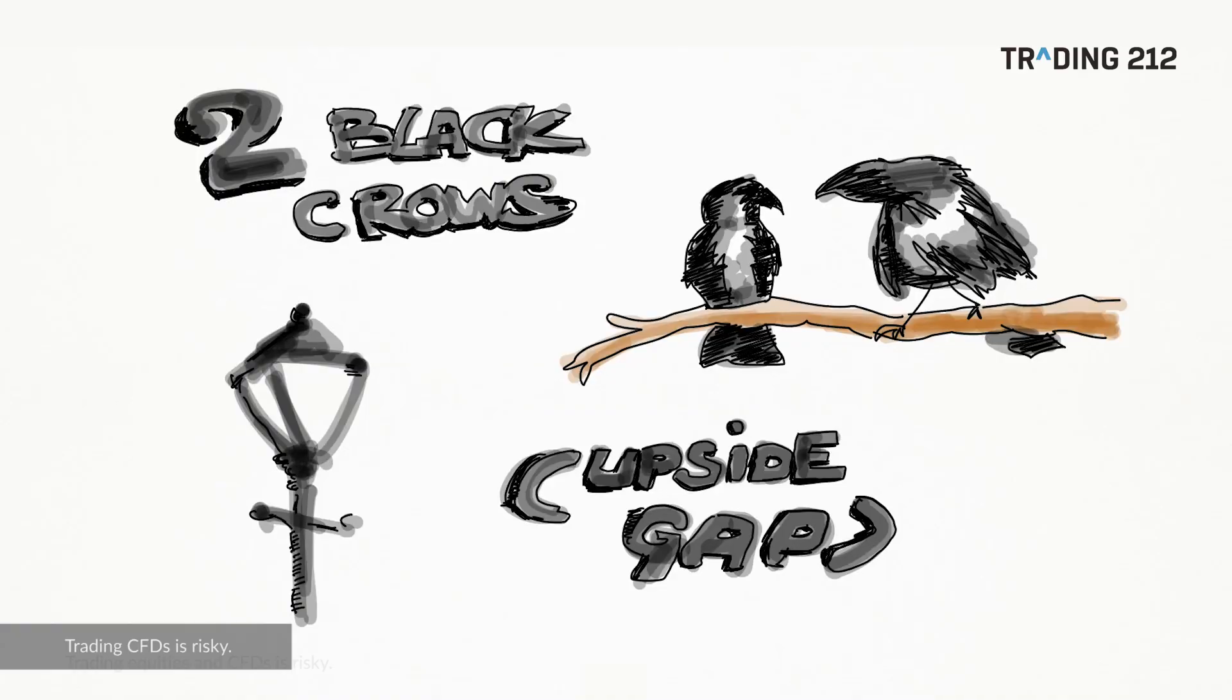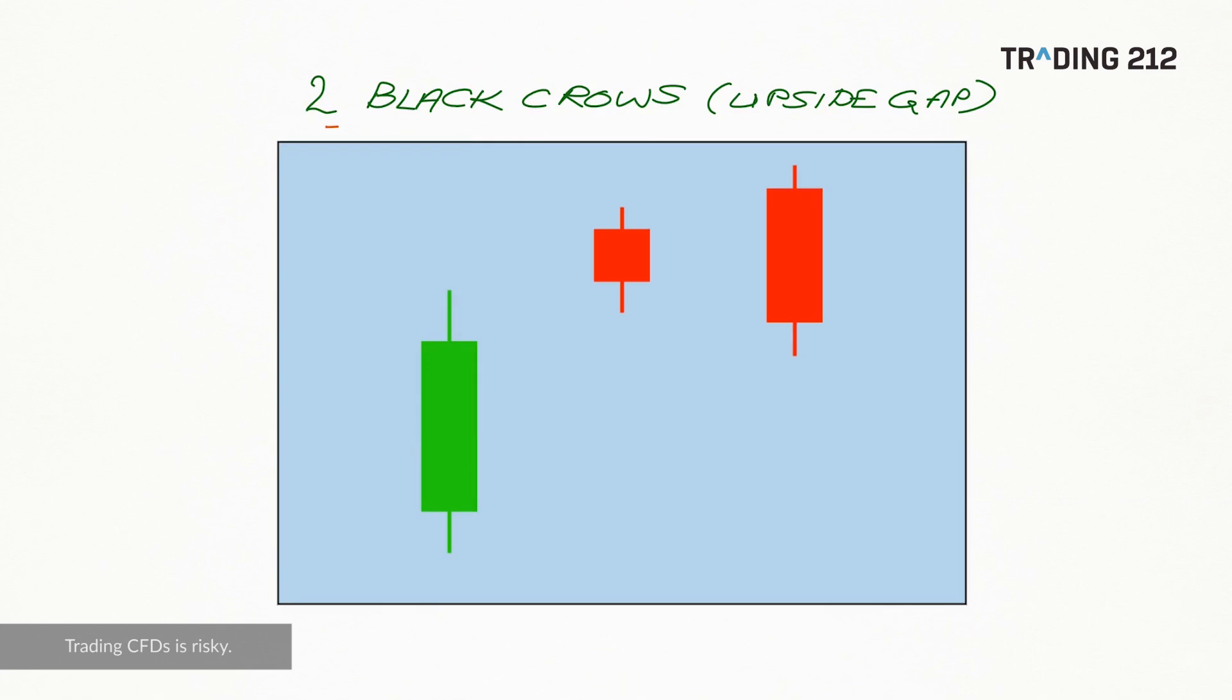Pattern number one: two black crows with an upside gap. So two black crows upside gap is not the catchiest of names. It is a bearish pattern and we might have a rising market here, but the first part of the pattern is this green candle.